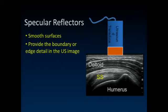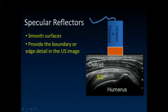Specular reflectors provide the beautiful boundary image information we see — the subcutaneous fat, the boundary of the deltoid musculature, the fibrous nature of the muscle, the subacromial subdeltoid bursal space, the supraspinatus muscle, and the cortical surface of the humerus at the greater tuberosity. We'll discuss later why we don't see into that bone.